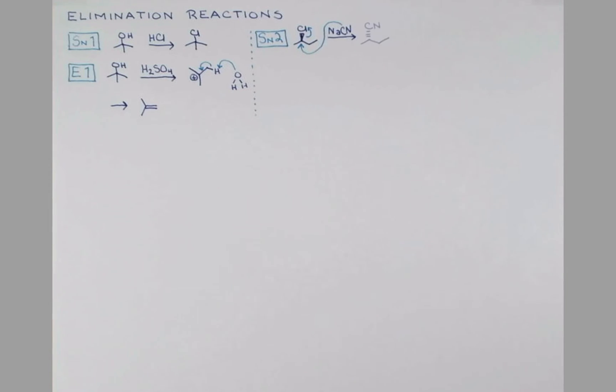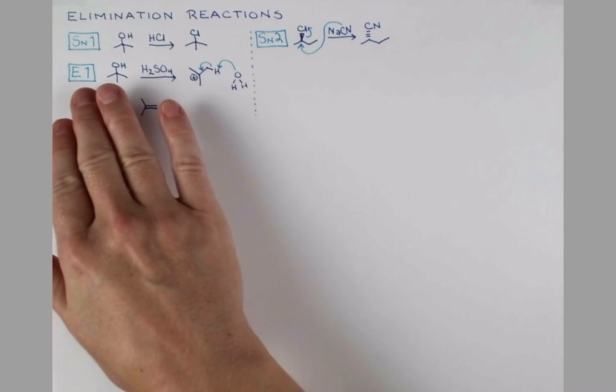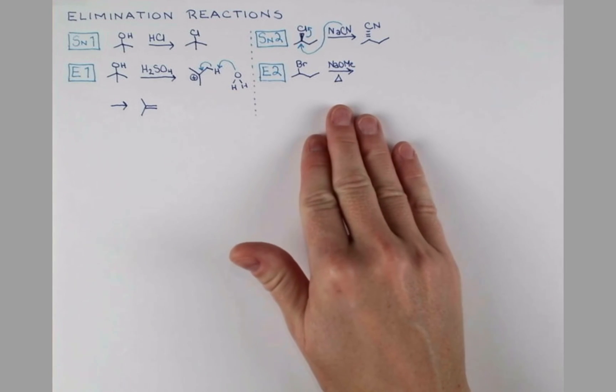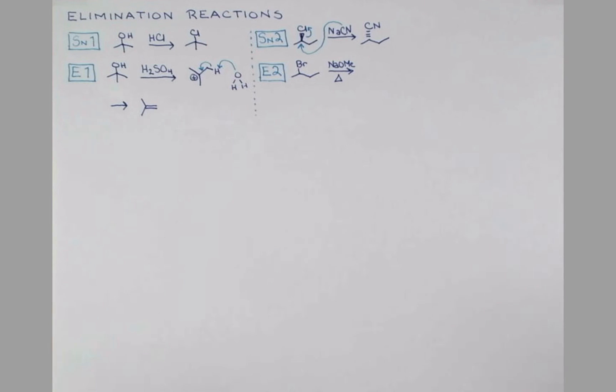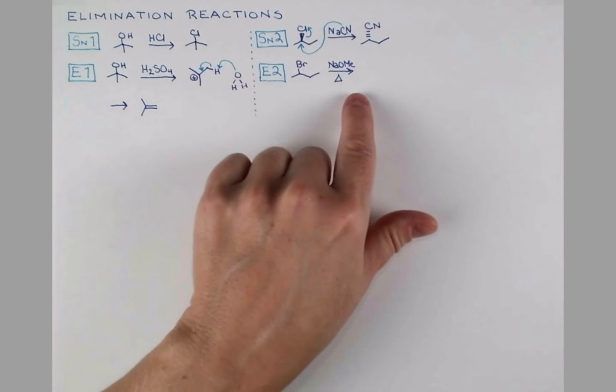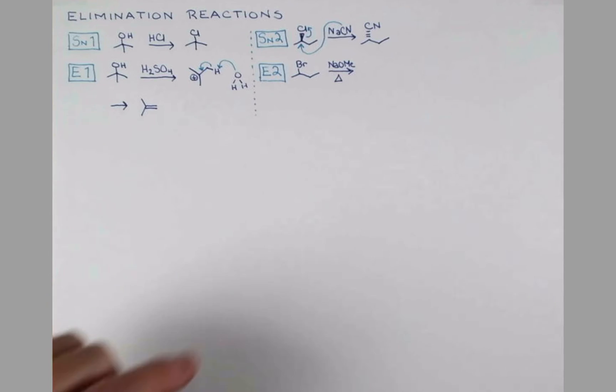giving a product with inversion of stereochemistry. You may have guessed it, based on SN1 and E1, the reaction that competes with SN2 is called E2. For this example, let's use 2-bromobutane. We'll treat this with sodium methoxide, and for good measure we'll heat it. Elimination reactions are favored at higher temperatures, so elimination reactions will typically be carried out at room temp or above.